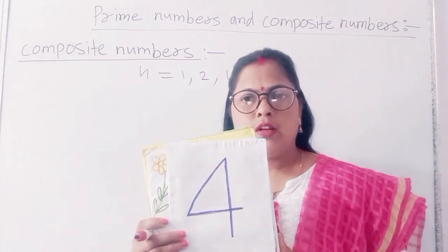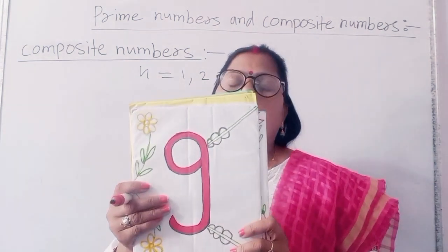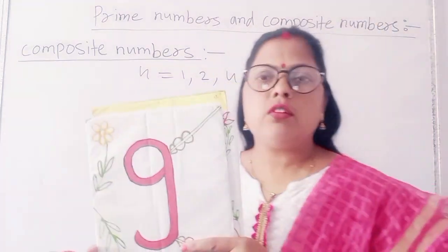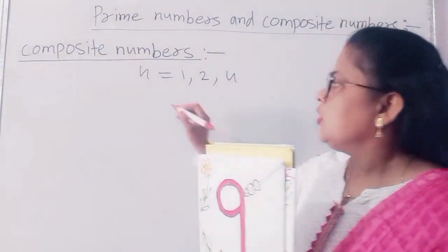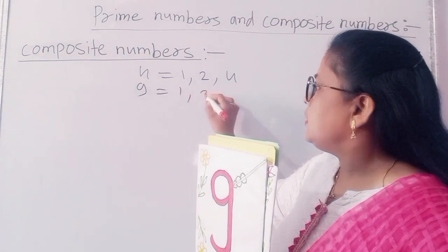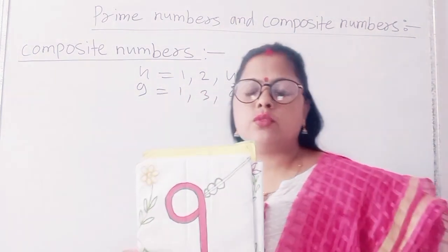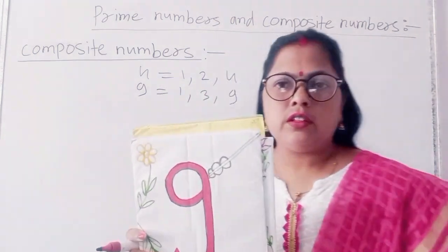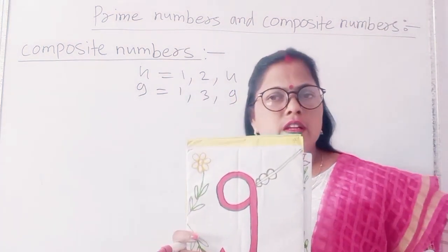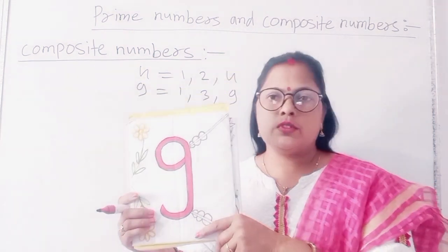Four is also the smallest composite number. Next I have taken 9. Is 9 a composite number or not? First I will find the factor of 9. The factors of 9 are 1, 3, and 9. So 9 also has 3 factors, which means more than 2 factors. So 9 is also a composite number.